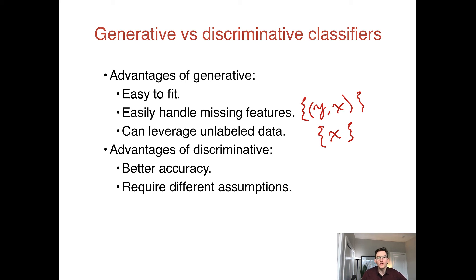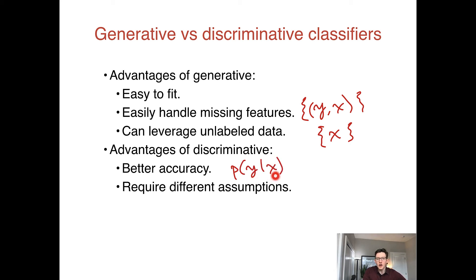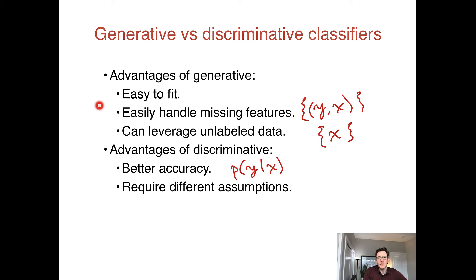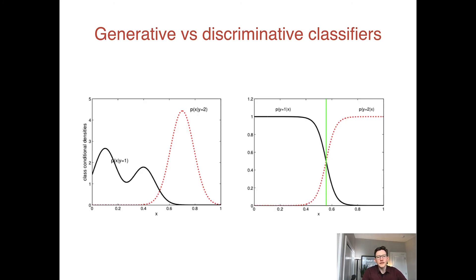Now, what about the advantages of discriminative models? Discriminative models usually end up with better accuracy. Because we're optimizing the probability of y given x — our posterior probability — if what we want is accuracy, that's directly what the model is optimizing. In the logistic regression case, we get the global optimum of our objective: the linear boundary that gives the best possible accuracy on our training set. The generative model optimizes something different, so it often yields slightly worse accuracy.